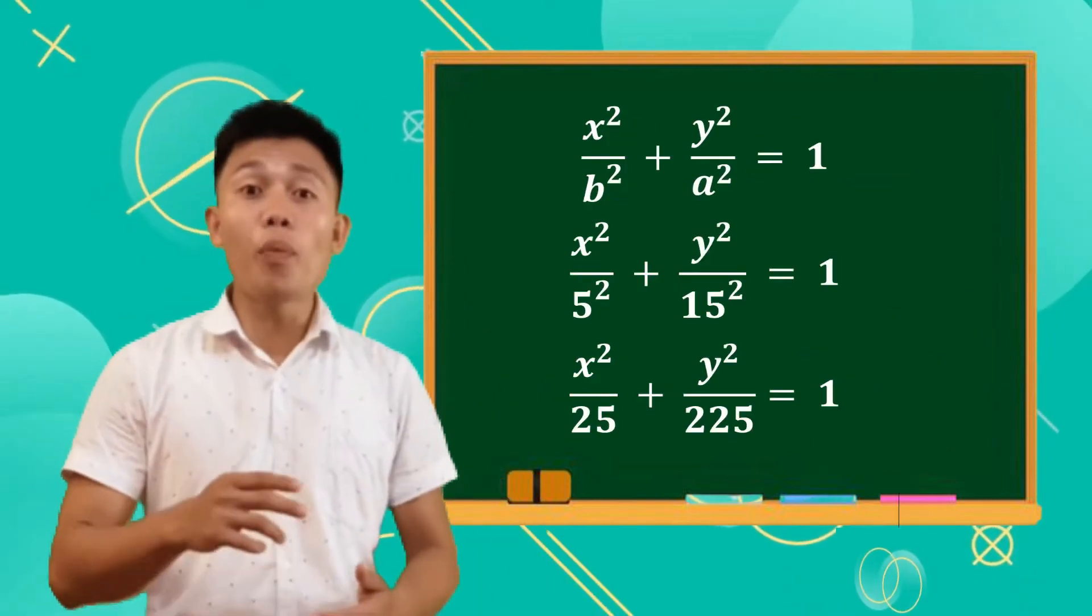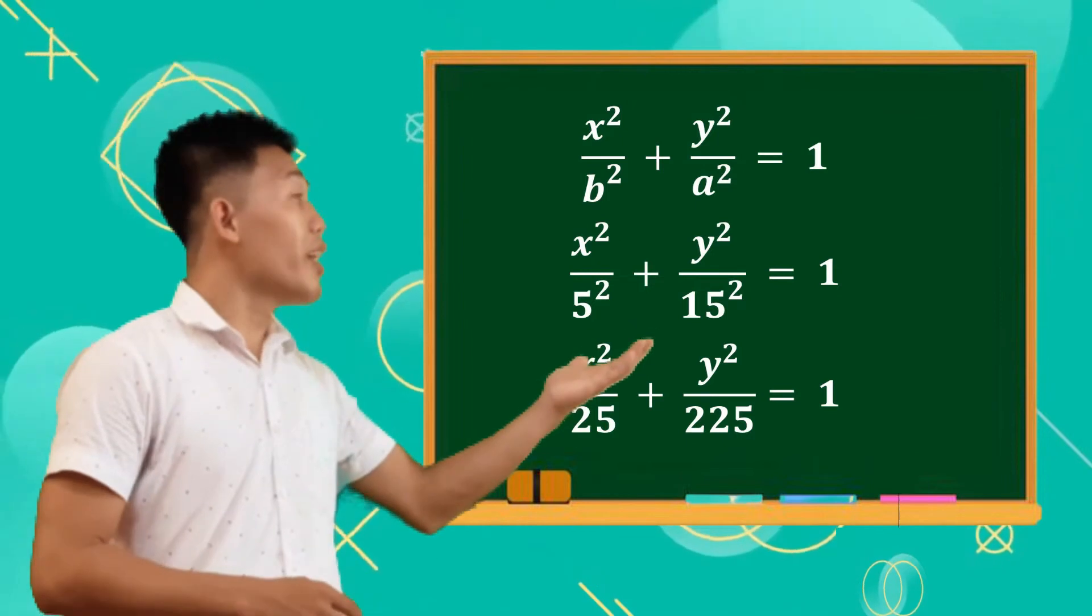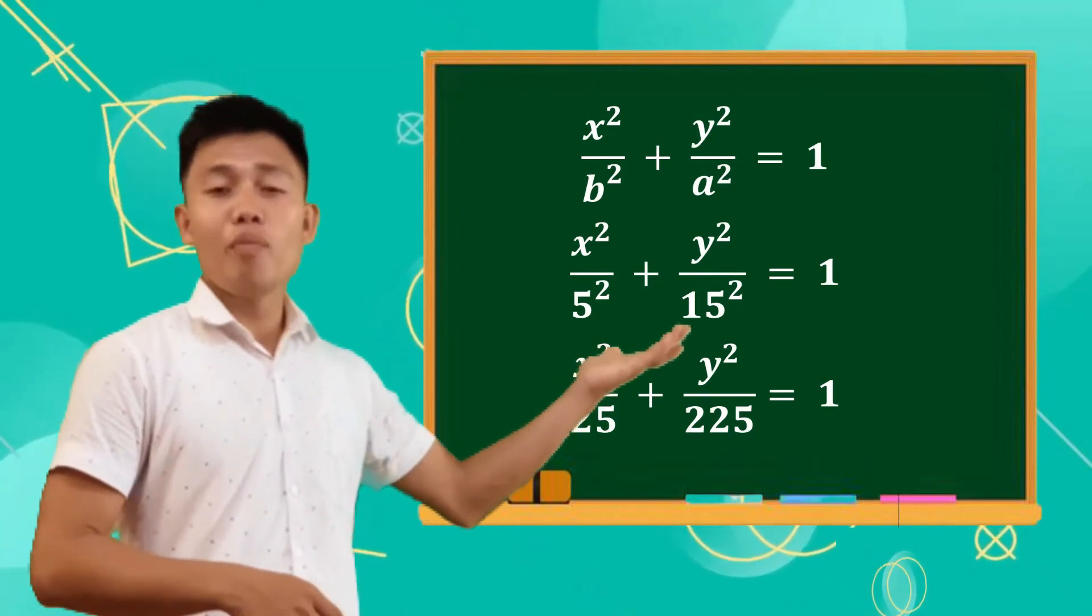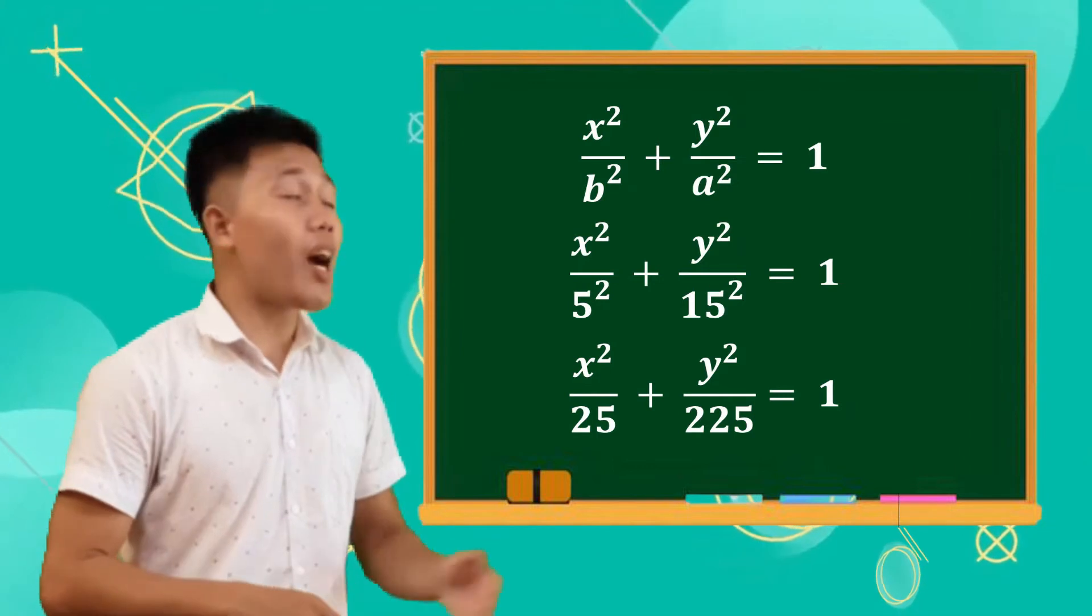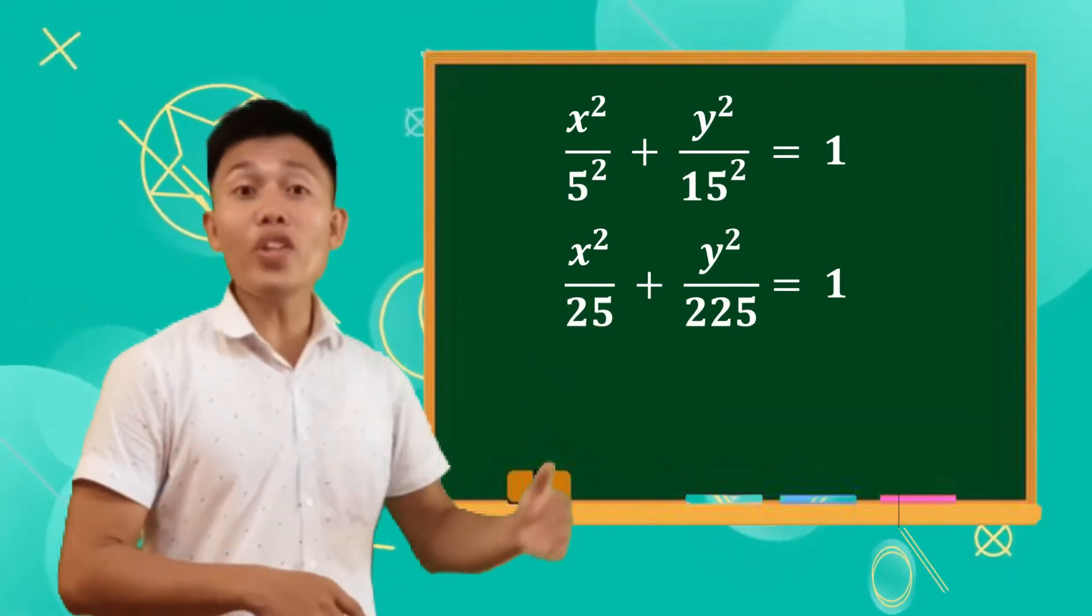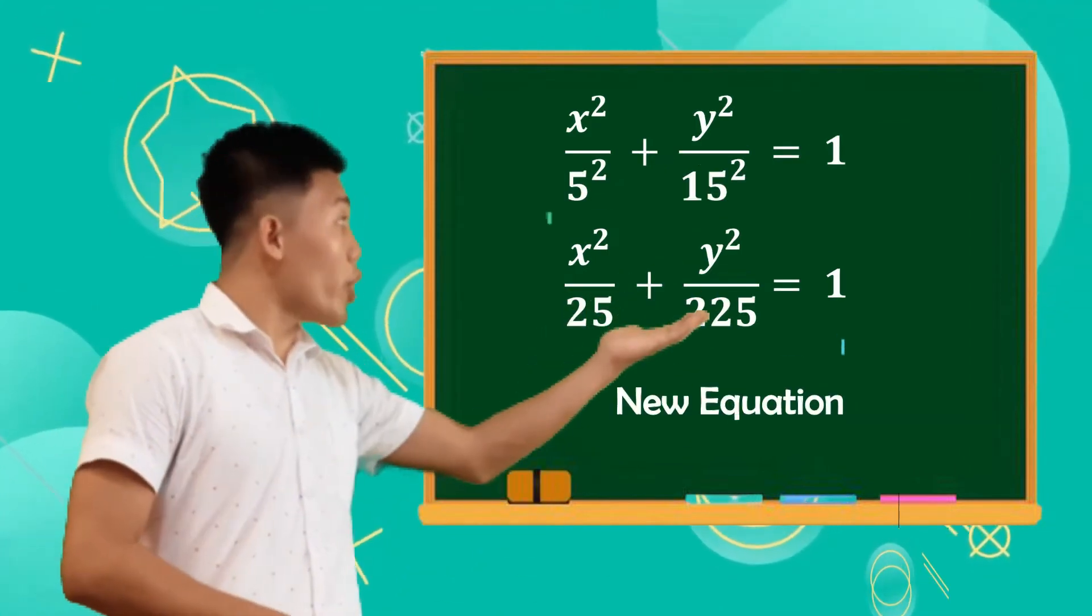Just substitute the value of b and a respectively. It will become 5 squared and 15 squared. Simplify it, it will become 25 and 225. This is our equation now: x squared over 25 plus y squared over 225 equals 1.